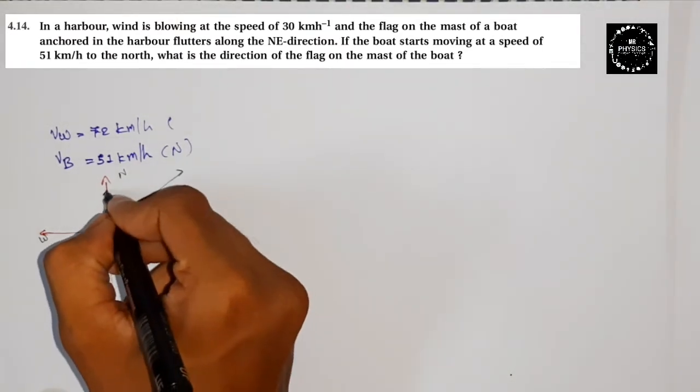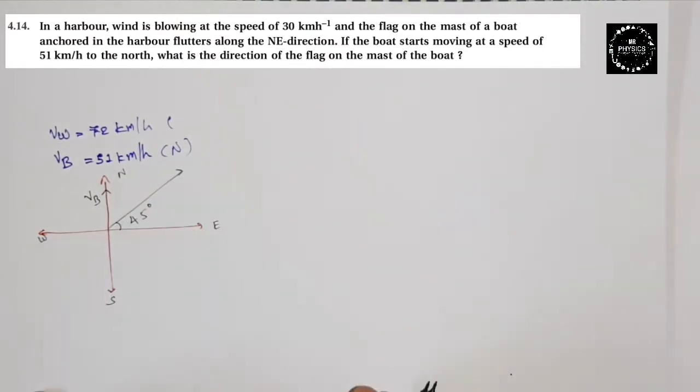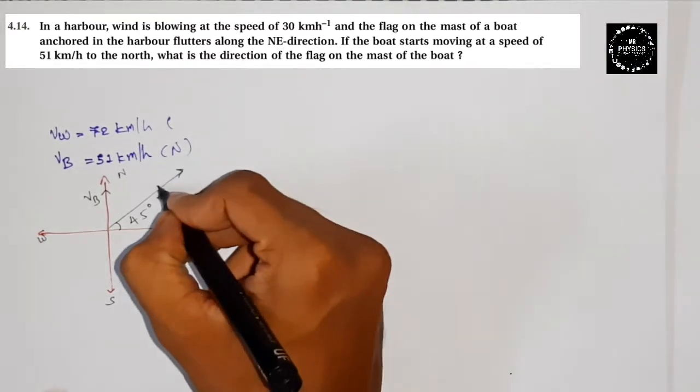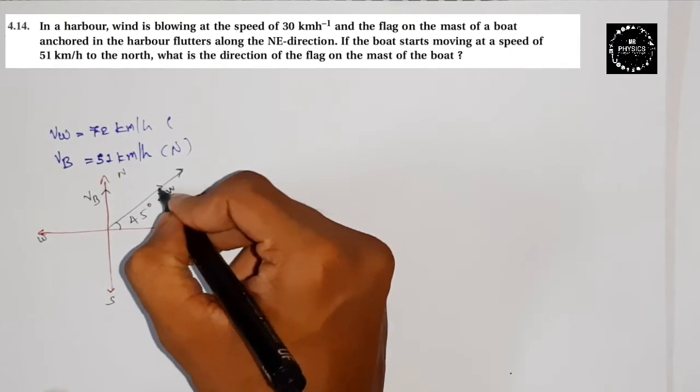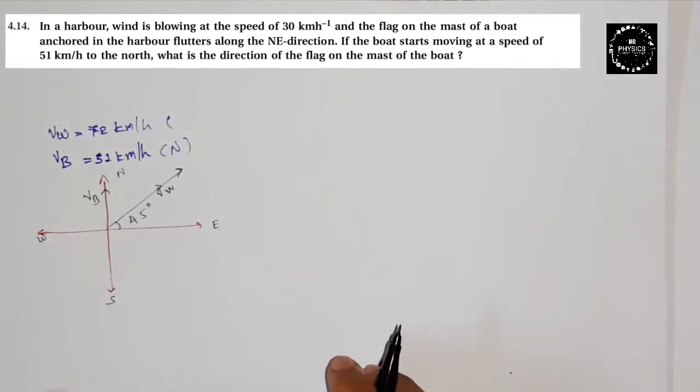Velocity of boat means in which direction is it going? North direction. This is the velocity of boat. Now, what else is given here? We need to define the velocity of wind with respect to the boat. The velocity of wind, in which direction? In the direction in which the flag will go.